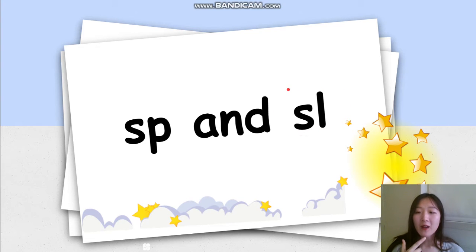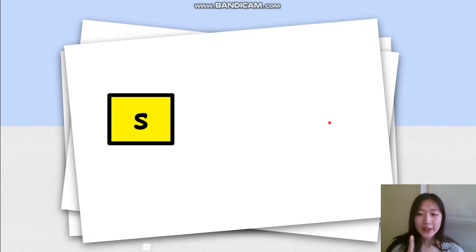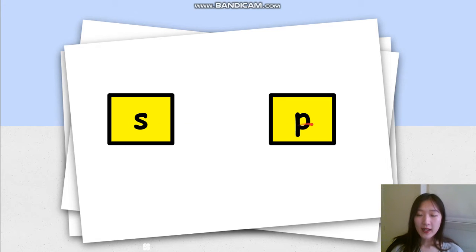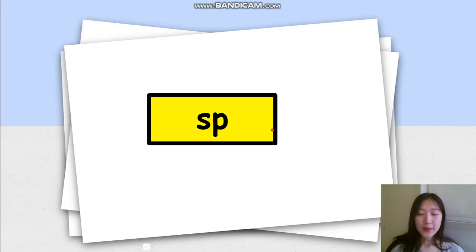SL. Like L — you're putting your tongue behind your teeth. SL. So let's start with the first blend: the letter S and the letter P. SP will sound like SP.